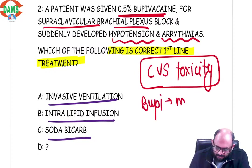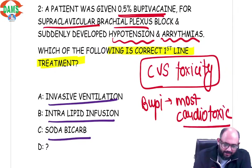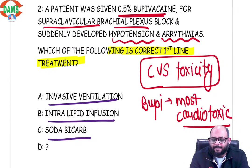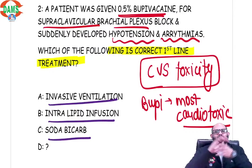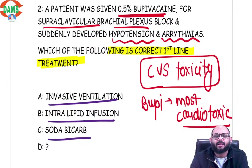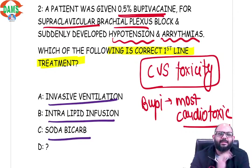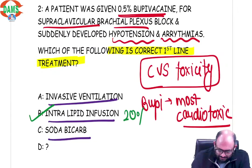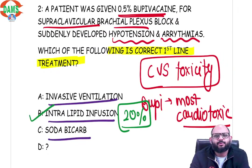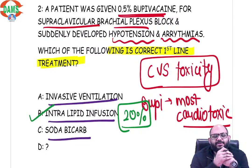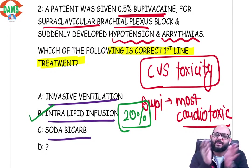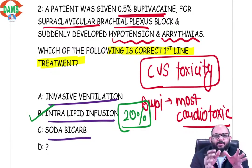Bupivacaine is the most cardiotoxic local anesthetic. Why? Because it is highly lipid-soluble and attaches to the highly lipid-rich environment of the myocardium. We can't really treat the cardiotoxicity of local anesthetics — the only thing we can do is try to decrease the intensity of this toxicity using intralipid, which is a 20% lipid emulsion. The first-line management is intralipid. After that it is supportive — no other drug is effective. If the patient suffers cardiac arrest, you give CPR and can use amiodarone or adrenaline as per ACLS protocol.